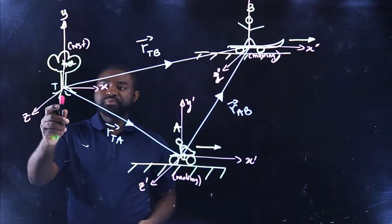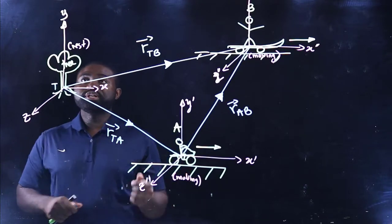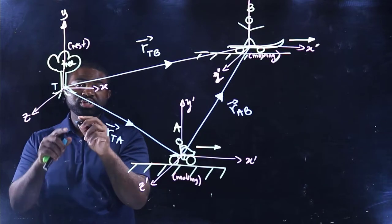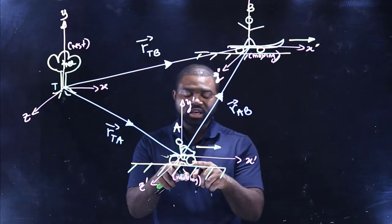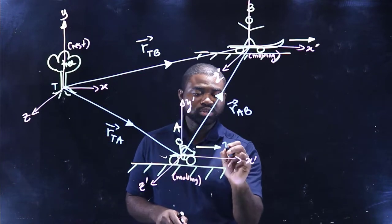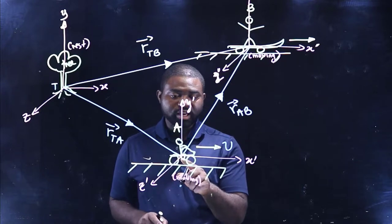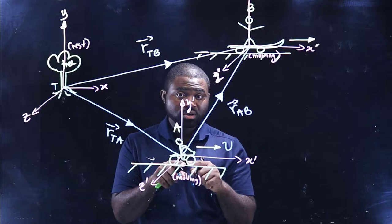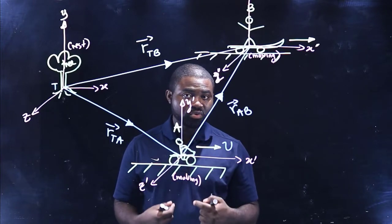We have a tree. The frame of reference of this tree is a set of coordinate axes attached to the ground, so the tree is at rest with respect to its frame of reference. The frame of reference of observer A is a set of coordinate axes attached to the bike, so observer A is at rest with respect to his own frame of reference.